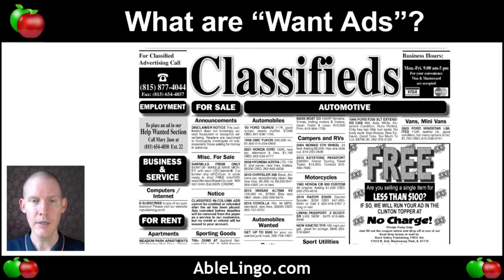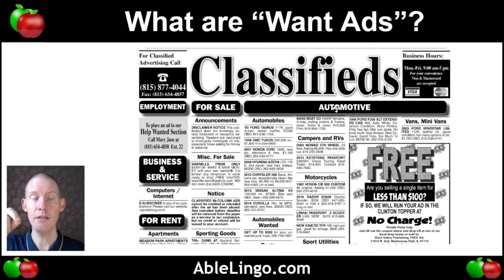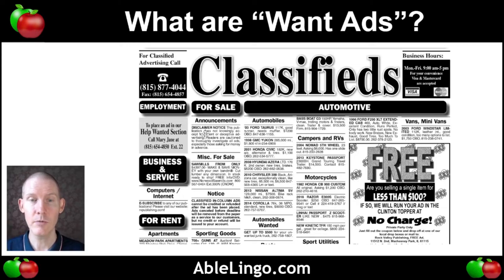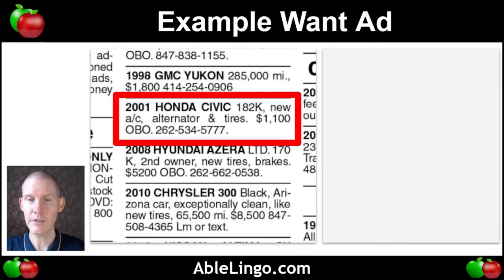There are announcements, miscellaneous for sale, automobiles wanted — so this is the classified section. People will pay a fee to the newspaper depending on the size of the ad. This one would cost more than this one because it's bigger. So let's take a look at an example want ad — this one is for a 2001 Honda Civic, which is a car.